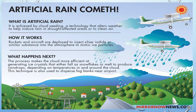Now to discuss artificial rain. What is artificial rain? It is achieved by cloud seeding, a technology that alters weather to help induce rain in drought-affected areas or to clean the air. How does it work? Rockets and aircraft are deployed to inject silver iodide or similar substances into the atmosphere to mimic ice particles. The process makes the cloud more efficient, generating ice crystals that either fall as snowflakes or melt to produce raindrops depending on temperatures in and around the cloud. This technique is also used to disperse fog banks near airports.